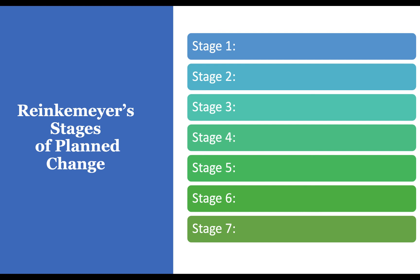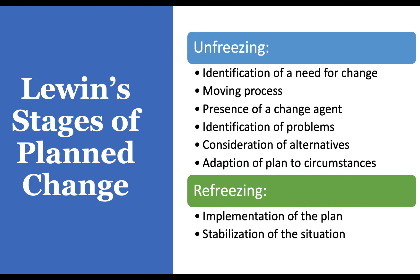You could use either Rinkmeyer's or Lewin's stages of planned change — Lewin's is a lot more simple. There are three parts: unfreezing — identifying the need for change; the moving process, which includes presence of a change agent (you, by the way, are the change agent), identification of problems, consideration of alternatives, and adaptation of the plan to circumstances; and then refreezing — implementing the plan and stabilizing the situation. Remember, if you change things too quickly, things can become unstable and you could make the problem worse. You have to be very careful in how you operationalize changes in your community.